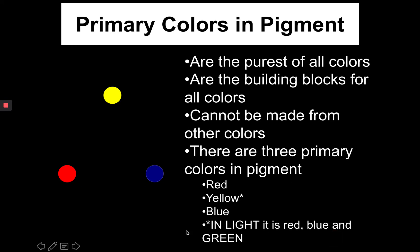Primary colors in pigment are red, yellow, and blue. But when we talk about additive color, we are talking about primary colors being red, blue, and green. But in subtractive colors, it is red, yellow, and blue.